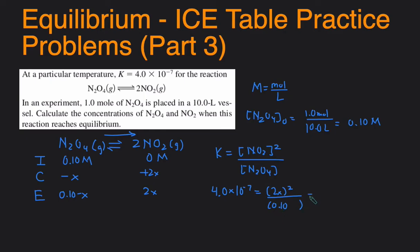So let's simplify this a little bit more. This will be 4x squared divided by 0.10. So then to solve for x, we can multiply both sides by 0.1, then divide both sides by 4, and then take the square root of both sides. And then that will give us x value of 0.0001.